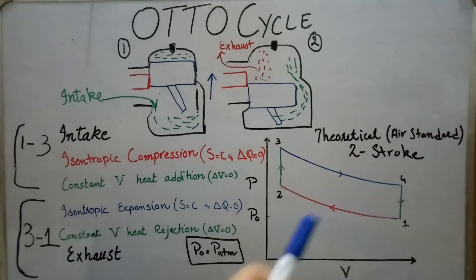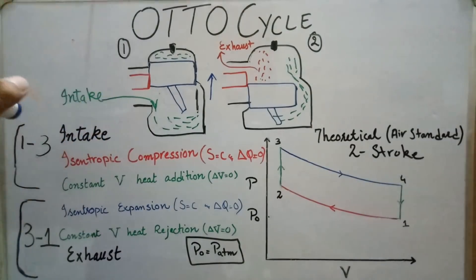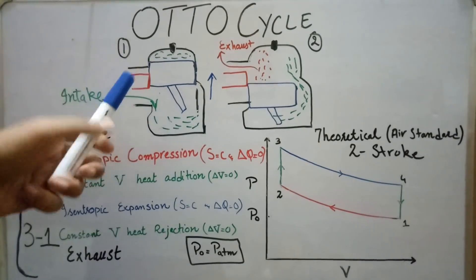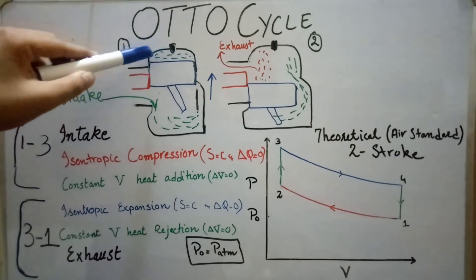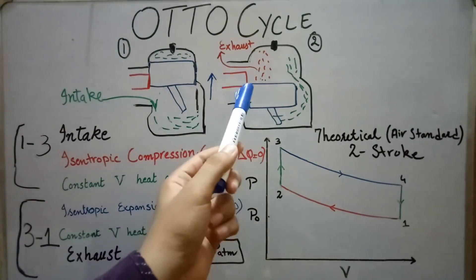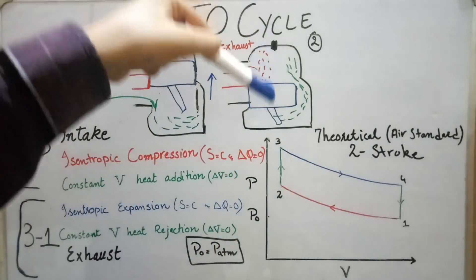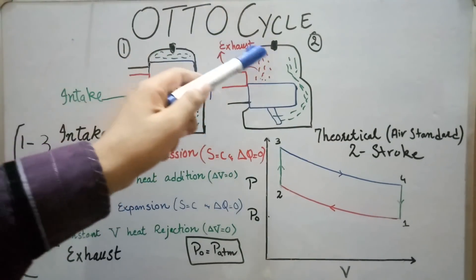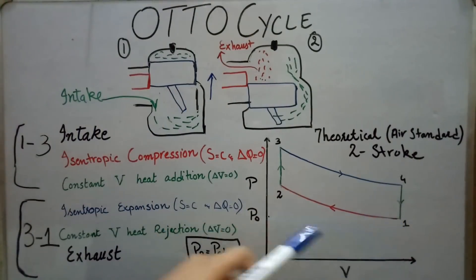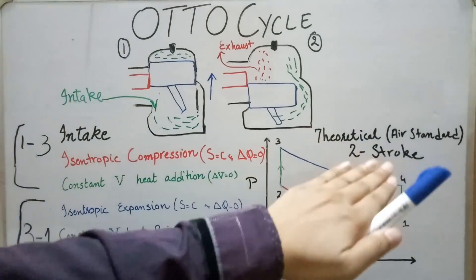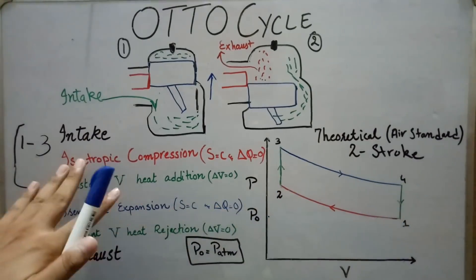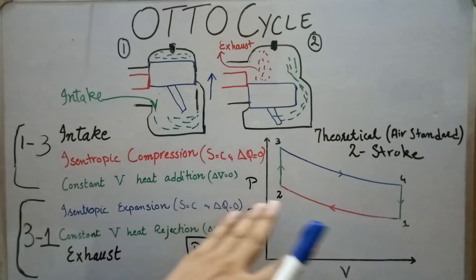In two stroke engines there are two ports — the intake port and the exhaust port. The compression of the working fluid and the intake occur simultaneously in the first stroke, and in the second stroke the expansion and exhaust occur simultaneously. We usually do not show the intake and exhaust on the graph for the theoretical two stroke Otto cycle because they occur simultaneously with the isentropic compression and isentropic expansion respectively.